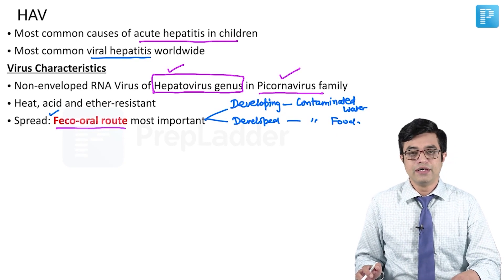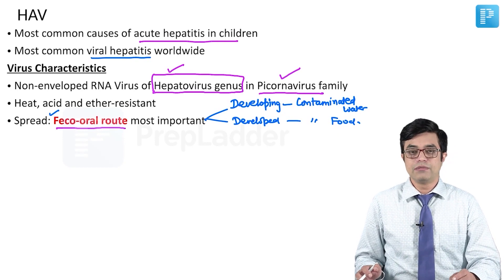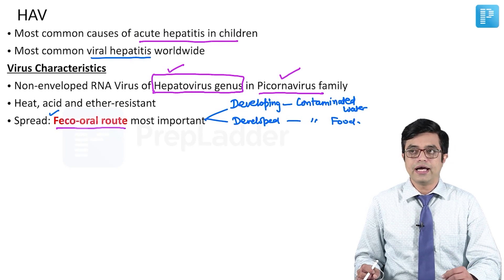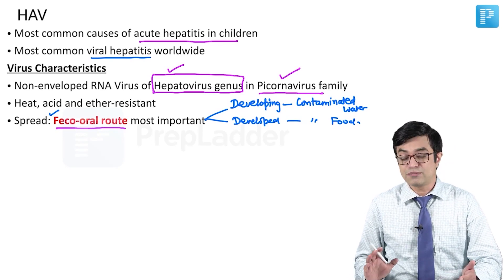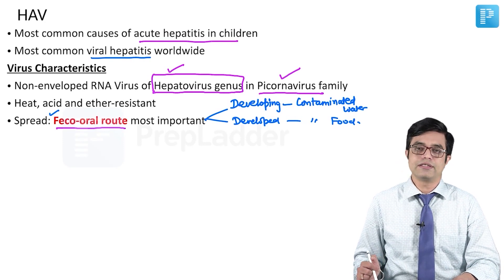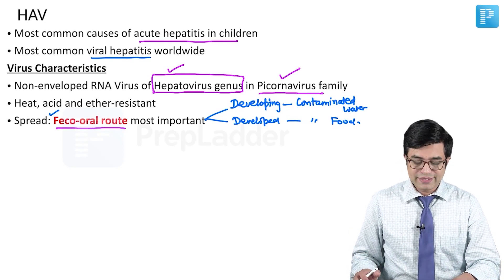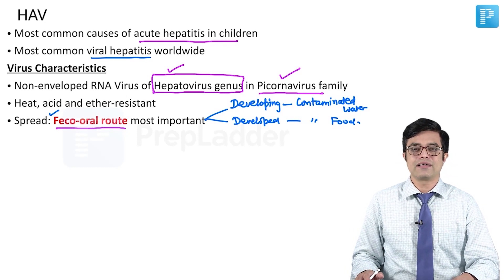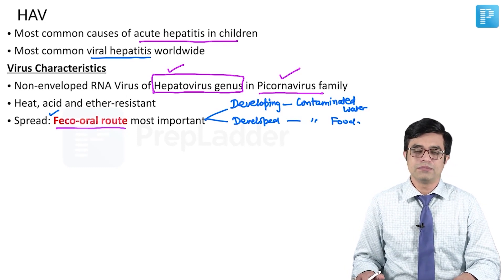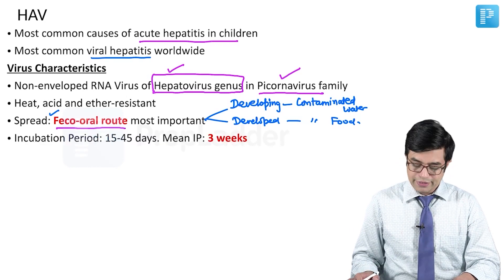HAV infections will be more common worldwide, especially in areas where there is overcrowding, poor hygiene, and poor disposal of sewage water. Although textbooks say that perinatal transmission has been reported in a minority of cases, for all practical purposes it is more theoretical than practical.